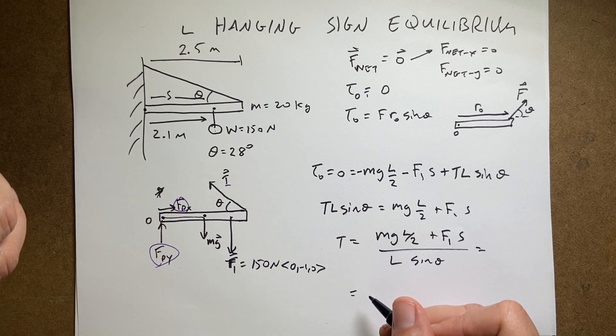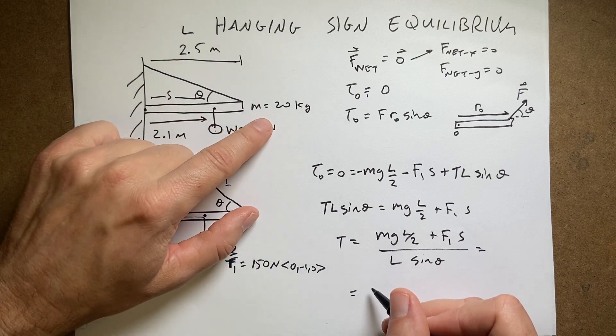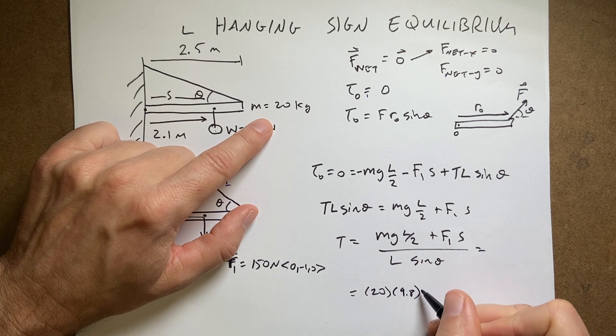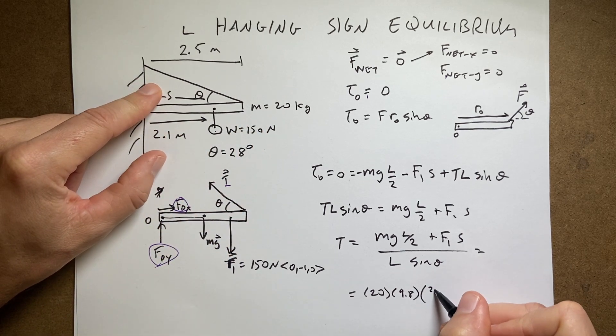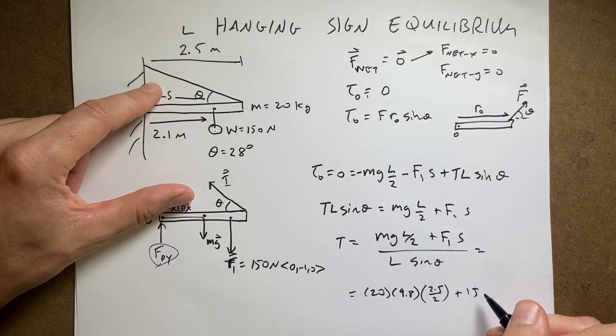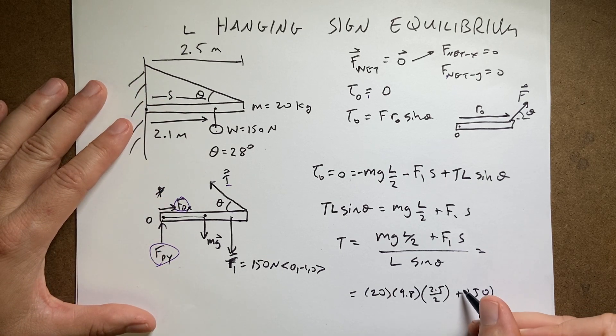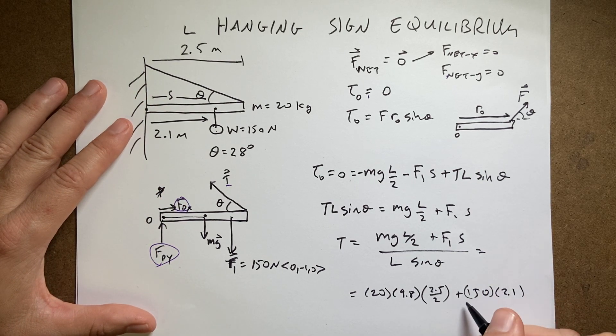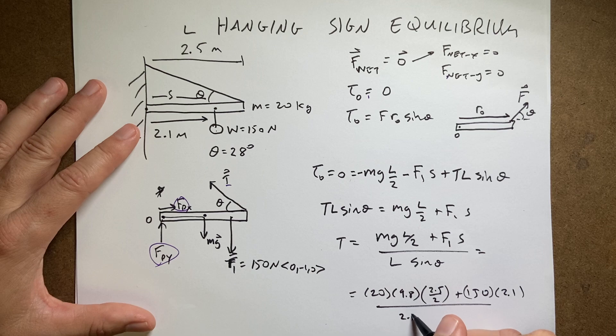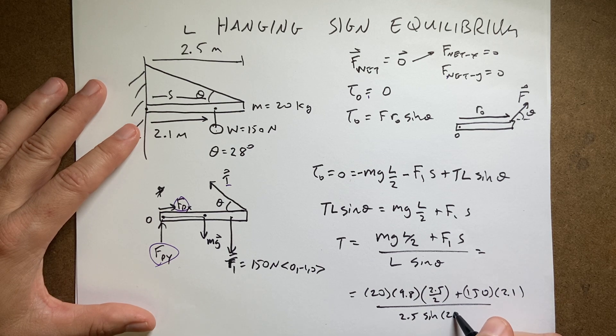So I get, what did I say? 20 times 9.8 times 2.5 over two plus 150 times 2.1 all that over L 2.5 times sine of 28.